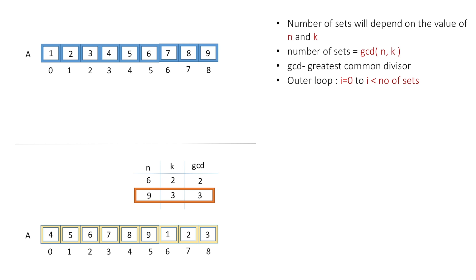We take variable i for the outer loop running from i=0 to i less than the number of sets. At the start of each set, variable j equals i, so initially j=0. We need to shift each element k positions left, finding the element that comes at index j using the formula: a[j] = a[(j + k) % n]. This means the element at index j equals the element k positions to its right, with modulo n to handle cyclic wrapping.